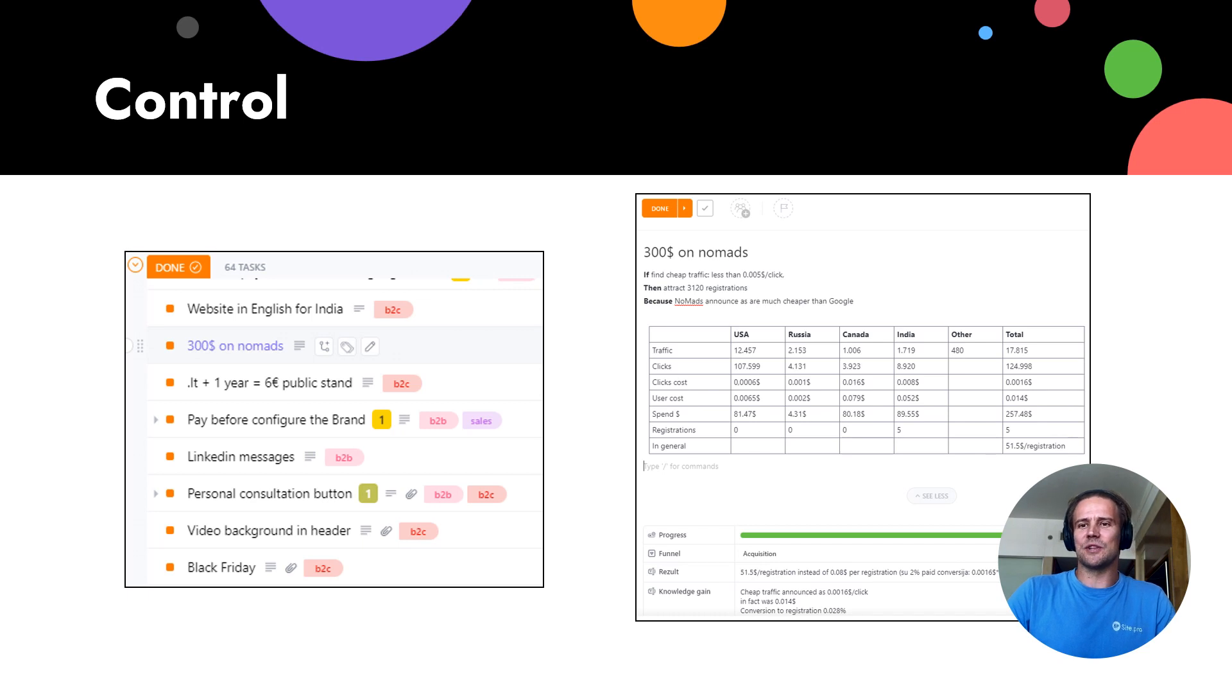And for example, our hypothesis was, if we sell domains in Lithuania cheaper than we buy, should we get some positive metrics? Some specific metrics, I will not explain them right now. So what is important? We need a tool to control the hypothesis. We use, let's say, ClickUp. There are lots of tools you can find on the web. Usually in your management system, you can also have this hypothesis tool.